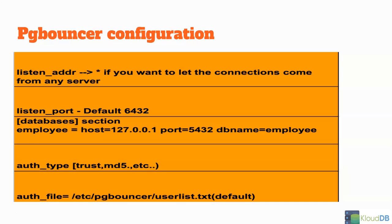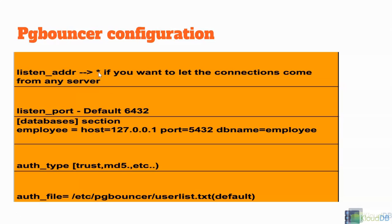The first thing we'll talk about is the listen address. If you set it to star, you can let connections come from any server. Set it to localhost and you restrict it to the local server.